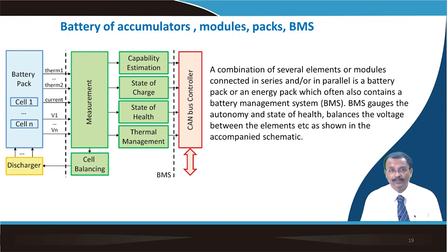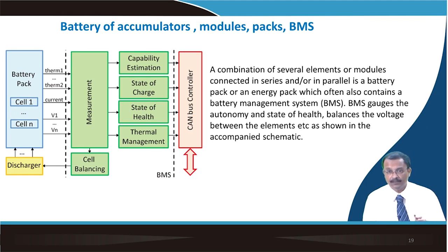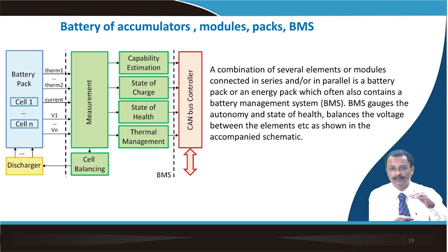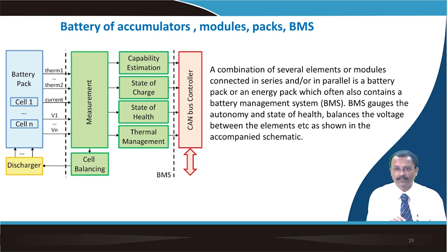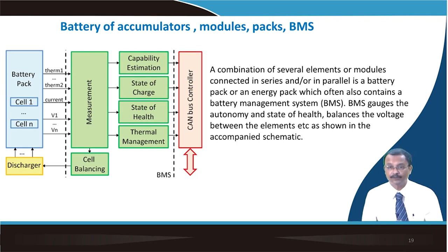A battery management system (BMS) is required when cells are connected in series and parallel, because one cell can malfunction without making the whole battery dead. Another issue is that discharge capacity for each cell — even from the same chemistry — need not be the same. Some cells may have higher capacity while others have a depth of discharge far greater, say 90% vs. 60%, so cell balancing is needed, either actively or passively.